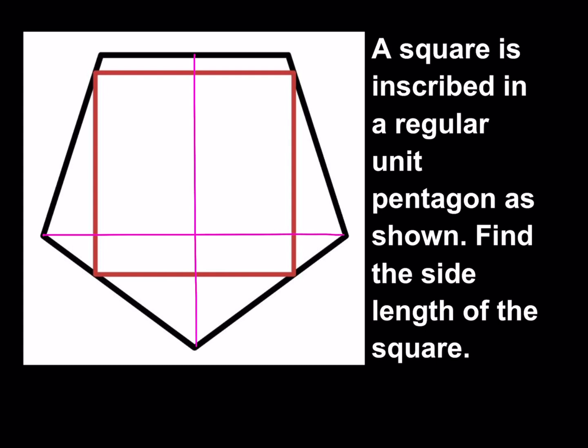We're going to be setting up our lengths. We're trying to find the side length of the square, so let's call that x. If the side length of the square is x, from symmetry this is going to be a midpoint and this is going to be a midpoint — so each half is x/2. Let's call this other length y; we don't know what it is yet.